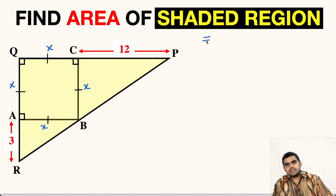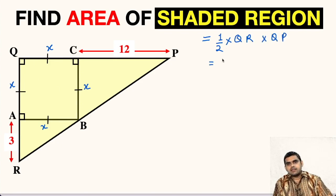Now, area of this shaded region will be the area of right triangle, which is half times its base multiplied with its altitude. We can take QR as its base and altitude as QP. Now we can substitute the value in terms of X. This will be half times QR will be 3 plus X, times QP will be 12 plus X. Now we have found an expression for area of this triangle.